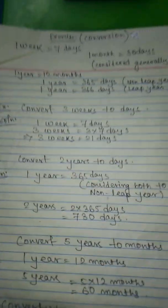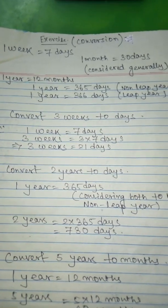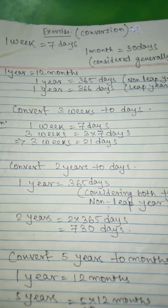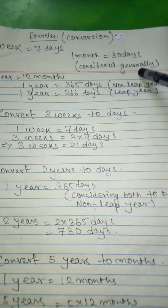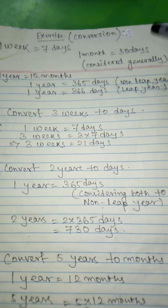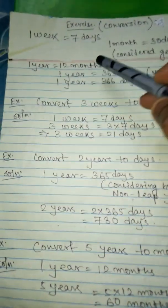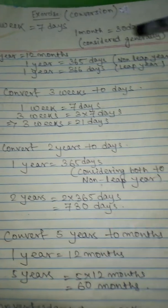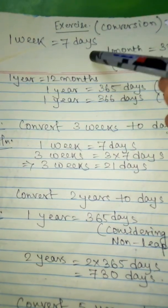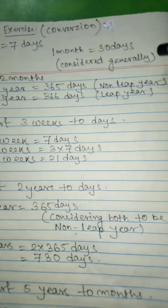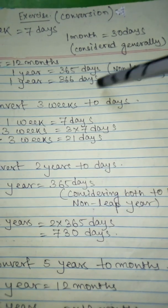Now we will do some time conversions. The key facts to note are: 1 week equals 7 days; 1 month equals 30 days (considered generally, without accounting for specific months); 1 year equals 12 months; 1 year equals 365 days for a non-leap year; and 1 year equals 366 days for a leap year.